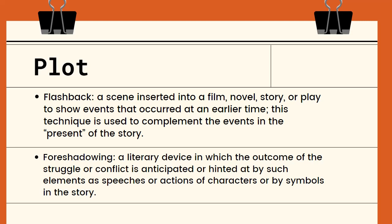For example, in the drama 'He's Into Her,' one flashback occurs when Dave remembers what happened with his brother and recalls his past relationship with Kim after they broke up. Next is foreshadowing — a literary device in which the outcome of a struggle or conflict is anticipated or hinted at by elements such as speech, gestures, or actions of characters, or by symbols in the story. It is like a clue about events that will happen later in the story.